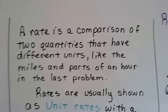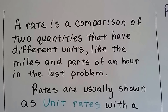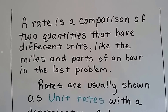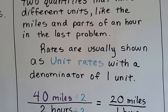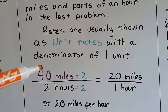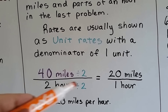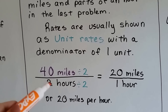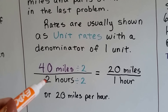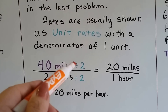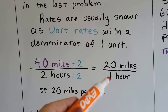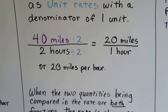A rate is a comparison of two quantities that have different units, like the miles and the parts of an hour in the last problem — two different types of units. Rates are usually shown as unit rates with a denominator of one unit. So if you go 40 miles in two hours, we divide both by two. We want the denominator to be one, so we divide the numerator by two as well. 40 divided by two becomes 20 over one — 20 miles per hour.